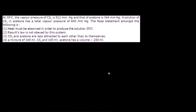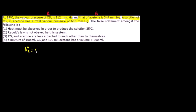The next question: at 35°C, the vapor pressure of CS₂ is 512 mmHg and that of acetone is 344 mmHg. A solution of CS₂ in acetone has a total vapor pressure of 600 mmHg. Let CS₂ be A and acetone be B. Applying Raoult's law: P⁰_A = 512 mmHg and P⁰_B = 344 mmHg. The question asks which statement about this solution is false.